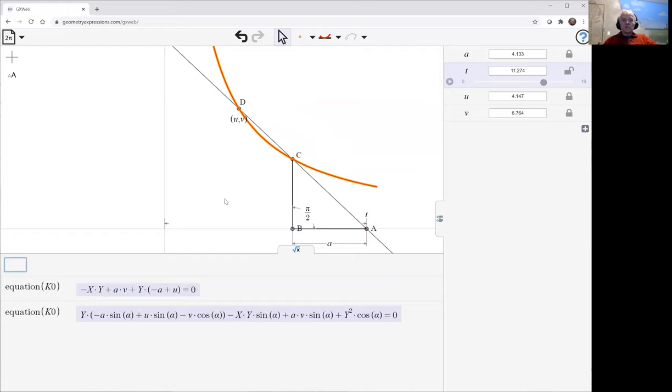And so we see there we have minus xy plus av plus y times minus a plus u. So what if we wanted that to be the hyperbola y equals one over x?